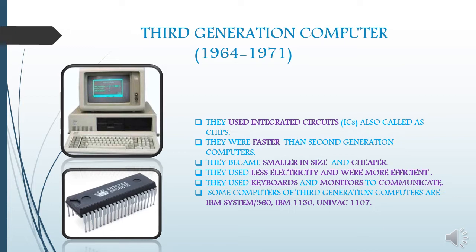1964 to 1971 was the period of the third generation computers. Integrated circuits were introduced during the development of the third generation computers. An integrated circuit, or IC, is as small as a transistor but it can work as fast as thousands of them. Integrated circuits made computers faster, cheaper, and smaller than the second generation computers. They used less electricity and made fewer mistakes.